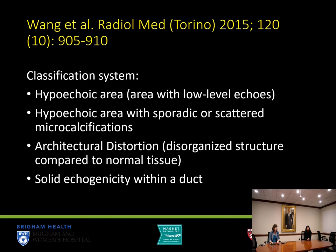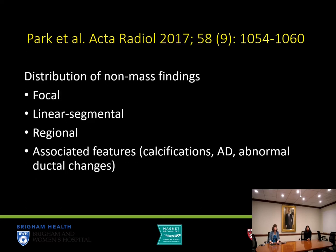The following year, Wang and colleagues proposed a classification including hypoechoic area with or without calcifications, architectural distortion described as a disorganized structure compared to normal tissue, and solid echogenicity within a duct. Finally, Park and colleagues described distributions of non-mass findings including focal, linear segmental, and regional, with the possibility of associated features including calcifications, distortion, or abnormal ductal changes.